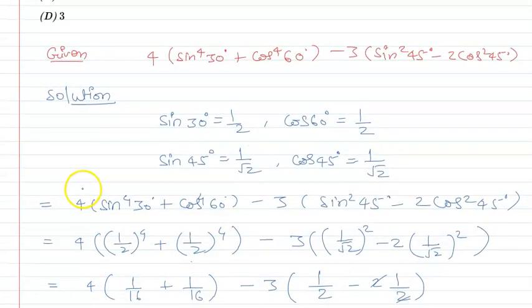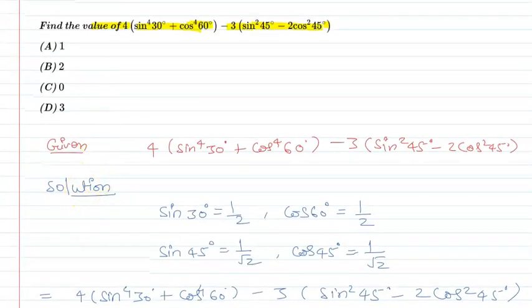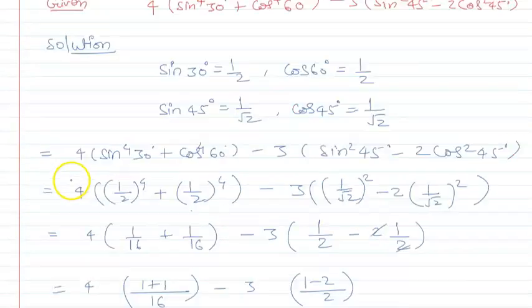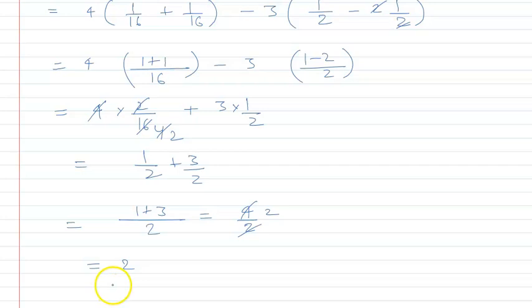Now checking the options, which option is correct? The value we got is 2, so option B is our correct answer. Hence we can say that option B is correct. So I hope you have understood the question, thank you.